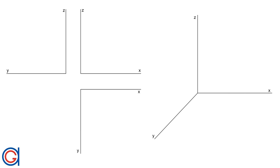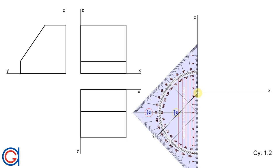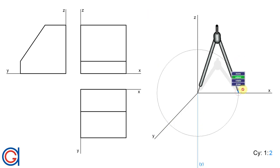In this video we are going to learn how to construct any oblique projection with any Y axis scale. To do this, we are going to use this simple object. We are going to start with a cabinet projection with a scale of 1 to 2 on the Y axis. The first step is to elongate the Z axis with a construction line, as can be seen here on the screen in a blue line.